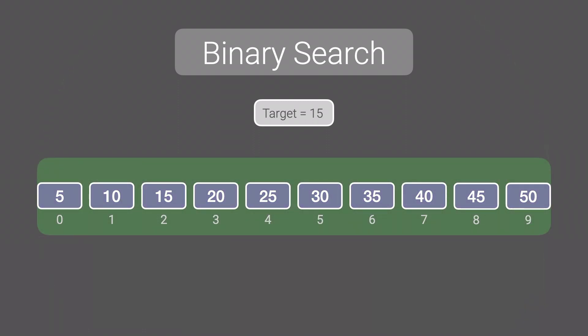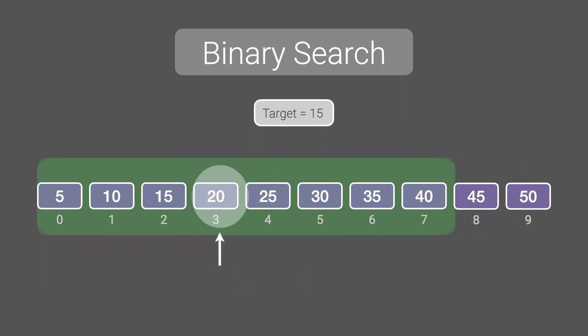Suppose we're looking for the value 15. With binary search, our initial position is going to be the middle index. Looking at our middle value 25, we ask if our target 15 is less than 25. Since 15 is less than 25, we move to the left. Notice that we cut our search area in green by half, because since our array is sorted, 15 must come before 25, so we'll only consider values to the left of 25.